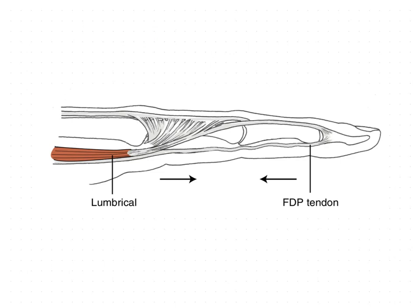When the lumbrical contracts, it pulls not only on the distal insertion but also on its proximal origin. During contraction of the lumbrical muscle, it has action at both the distal and proximal ends. The lumbrical attaches on the radial side, acting on the extensor mechanism distally, while proximally it is also pulling the flexor digitorum profundus tendon distally. Proximally, it is pulling the extensor mechanism proximally.